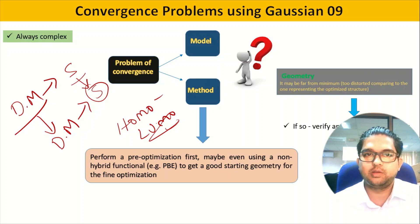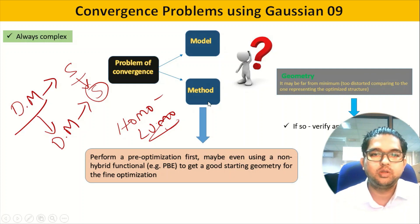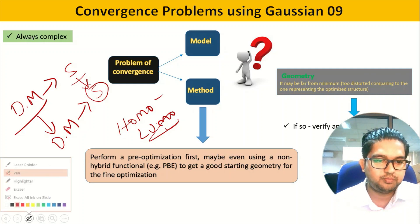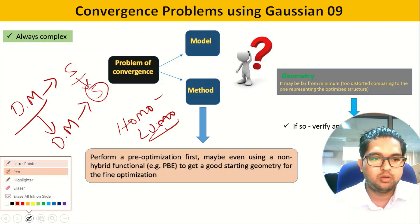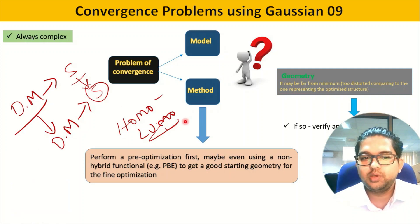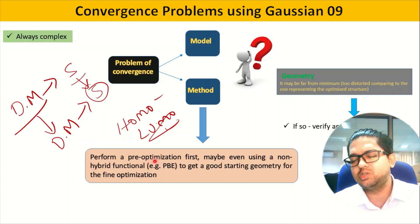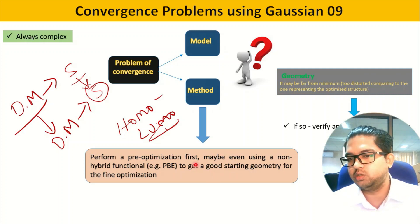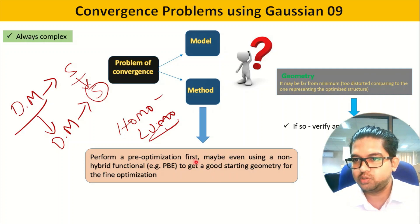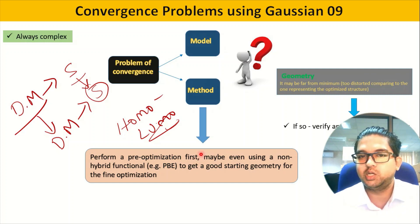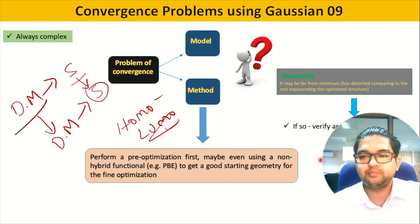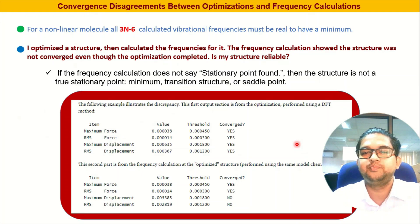Generally what we should do before submitting a calculation is pre-optimize the geometry using some lower basis set and theory, so that you get a good starting geometry. That is very important in theoretical chemistry — the input should have proper symmetry and proper orientation of elements.